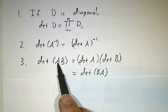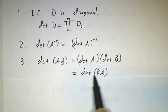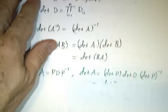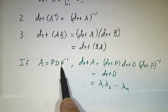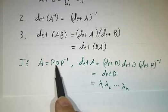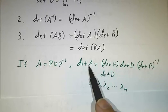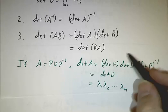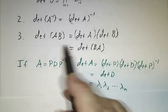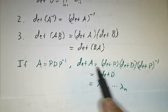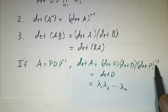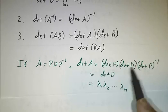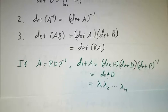Just like with traces, the determinant of AB is the same as the determinant of BA. So we can use the same argument that we did with traces and say if A is PDP inverse, then the determinant of A is the determinant of D. Since the determinant of a product is the product of the determinants, you just get the determinant of P times the determinant of D times the determinant of P inverse. This term cancels this term, and you get the determinant of D. So the determinant is the product of the eigenvalues.